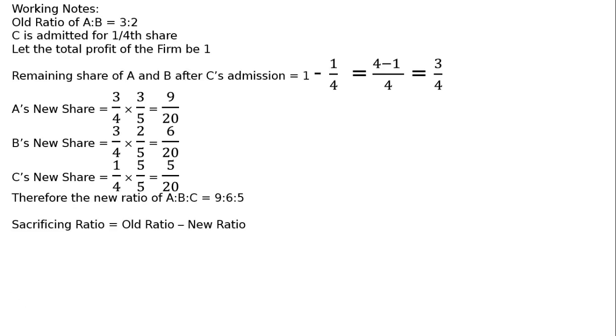Sacrificing ratio is equal to old ratio minus new ratio. A's sacrifice is equal to 3 upon 5 old share minus 9 upon 20 new share. That equals LCM 20. 4 into 3 is 12 minus 9, that equals 3 upon 20.